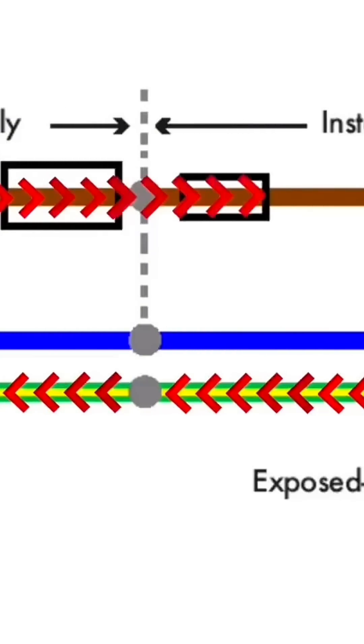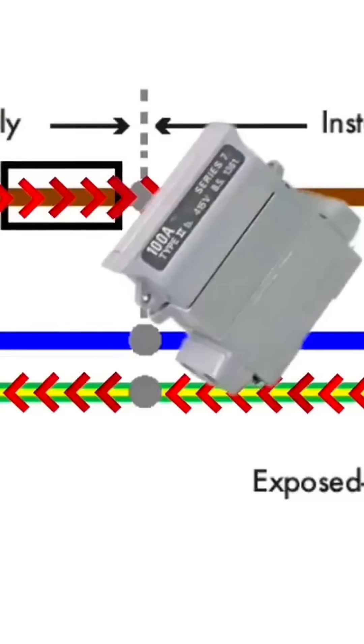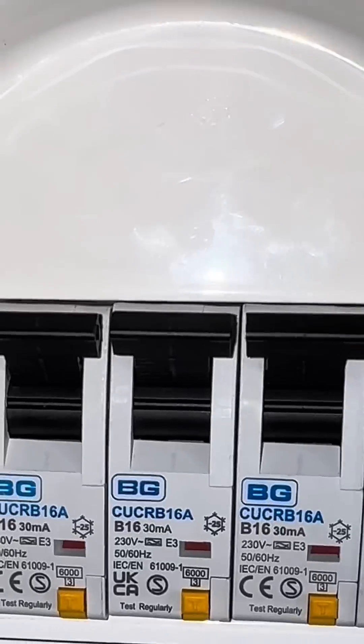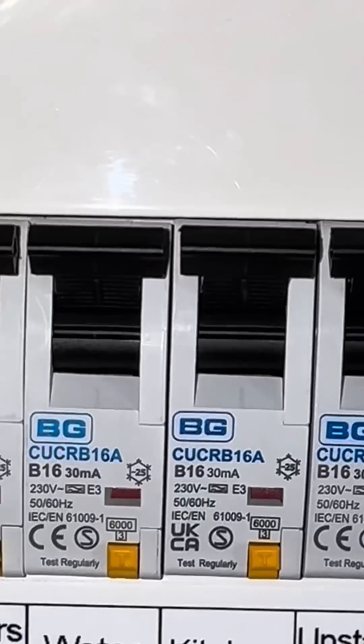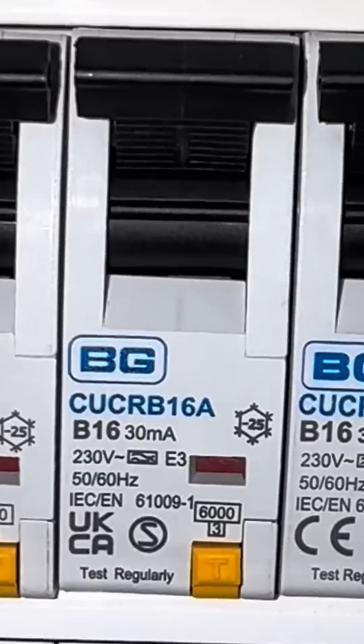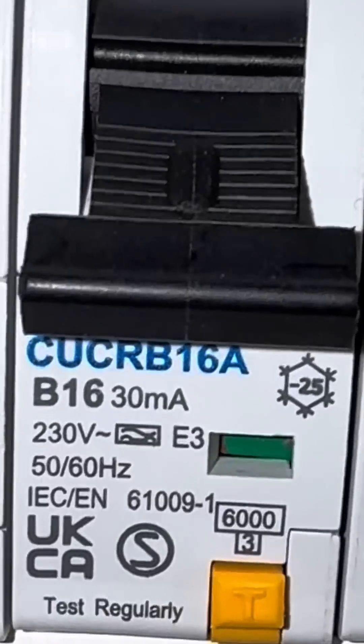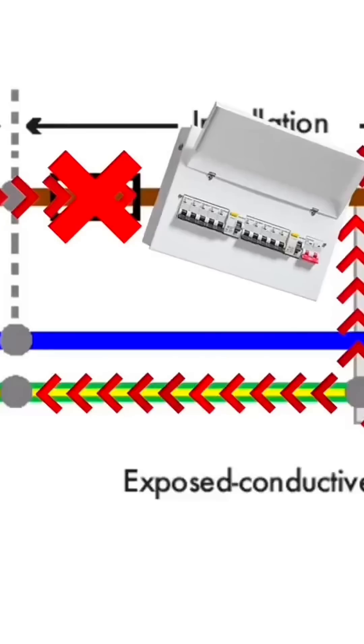The fault current will pass through the main cutout fuse rated at either 100, 80, or 60 amps but will not cause operation. The fuse that will operate is the one closest to the fault. In this case, the fuse located within the consumer's unit will operate, clearing the fault in circuit.